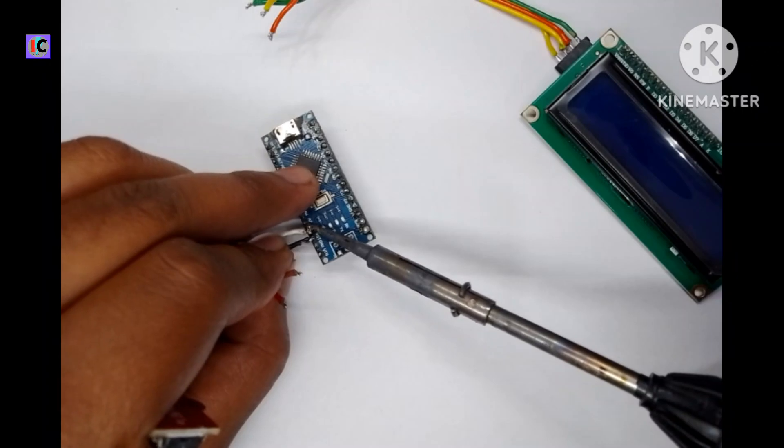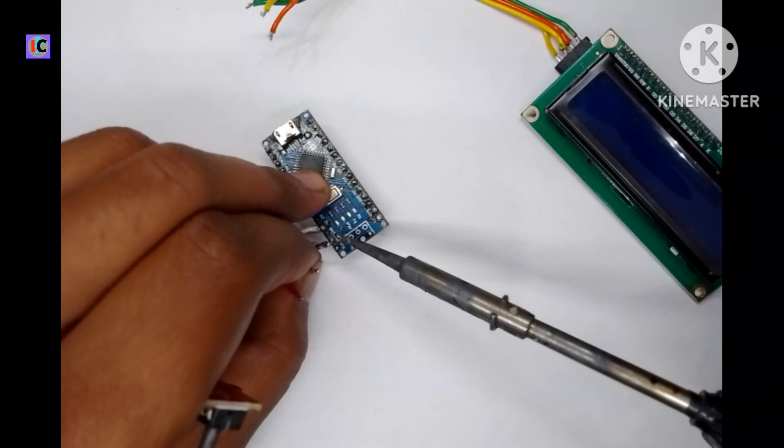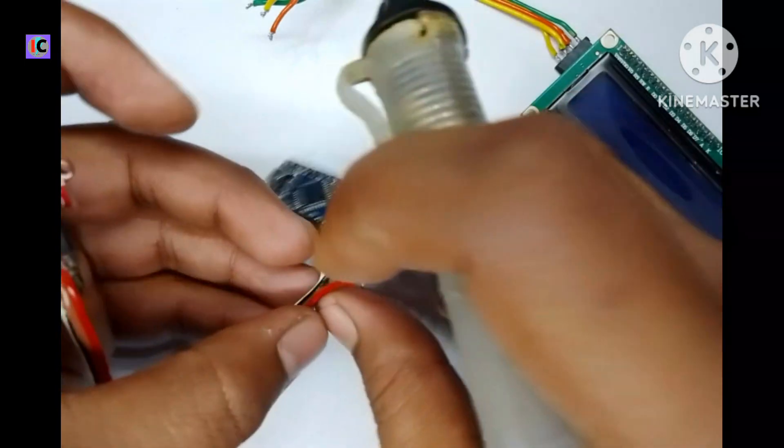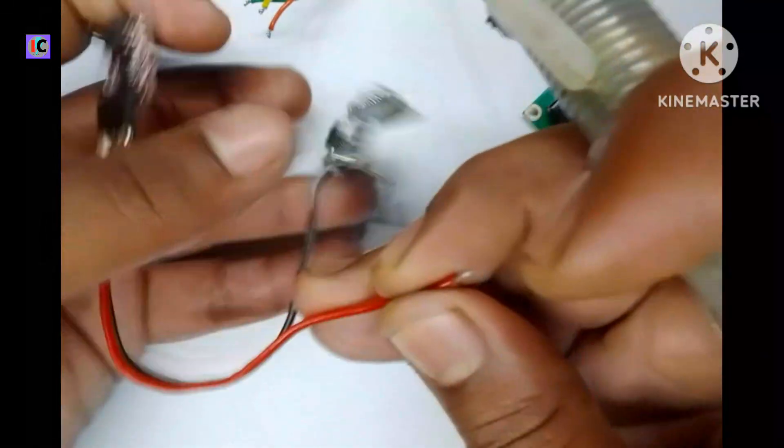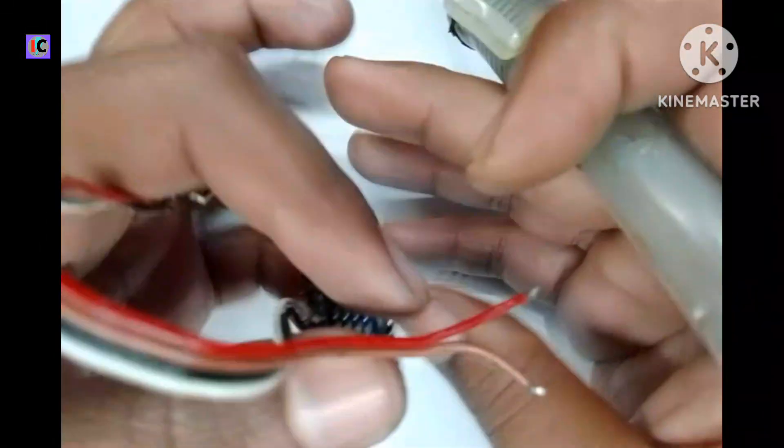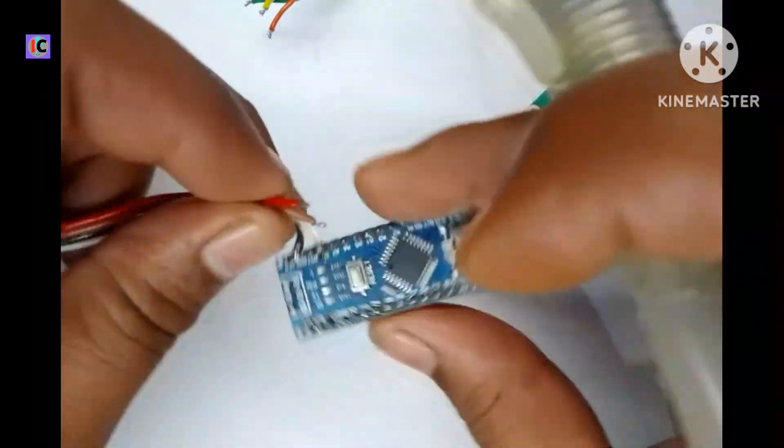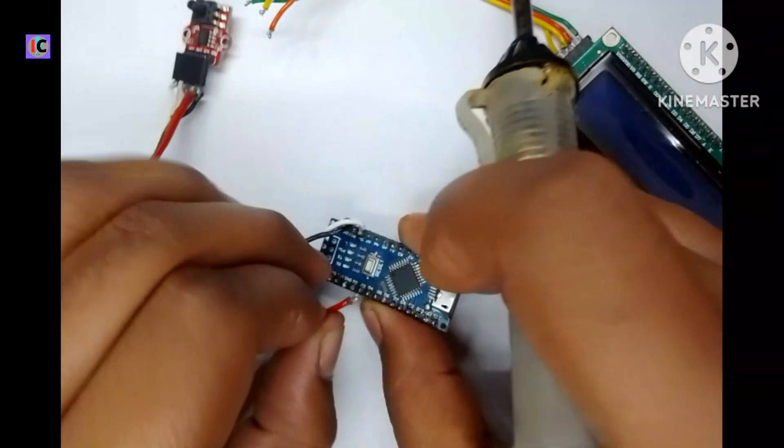Now we will connect the data pins - data out and clock pin. This will connect at digital pin number 3 and 2.